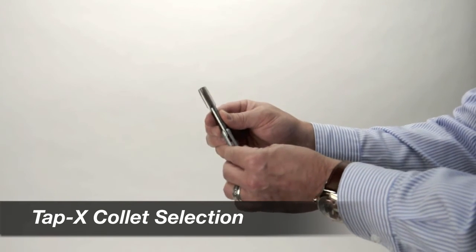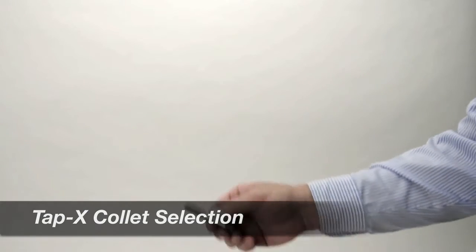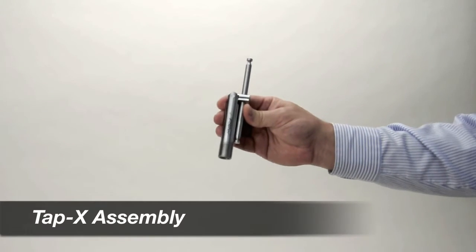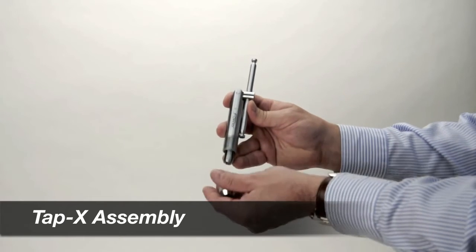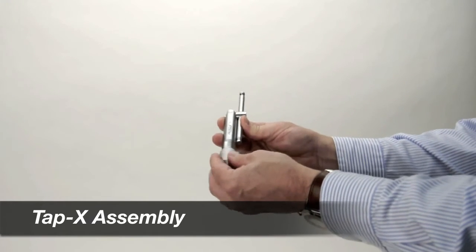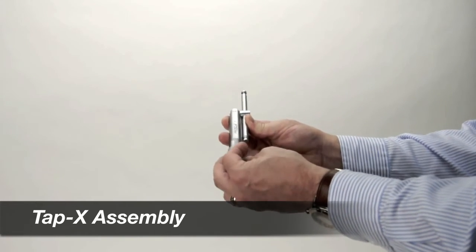For this demonstration, we are going to use the 1/4 inch to 1/2 inch end of the collet. To assemble a TAP-X, insert and turn the collet until it is seated on the inner pin. Carefully thread the knurled sleeve onto the wrench body and screw it on until it is just firm.